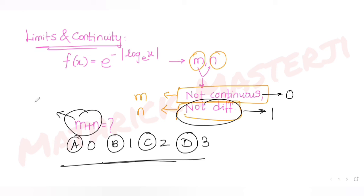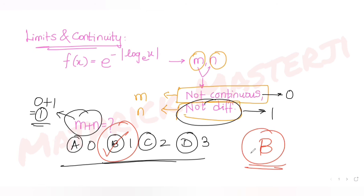We have m = 0 and n = 1, so m + n = 1. That matches option B, which is the correct answer. I hope you've understood how to solve this type of question using the concepts of limits, continuity, and differentiability. We'll continue our series on JEE Mains tomorrow with another question. Please like and subscribe to the channel and share it with friends preparing for JEE. Thank you.